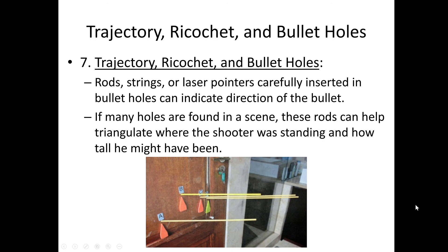Finally, trajectory, ricochet, and bullet holes. Using laser pointers, long sticks, and strings, investigators can find where bullets came from. They know where the bullets hit, and they use this to triangulate where the shooter was standing, how tall they might have been, whether they were walking, running, or moving, and what position they were in as they fired — all pretty useful stuff for solving a crime.